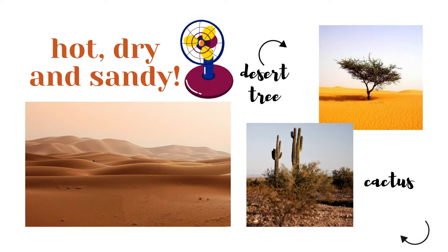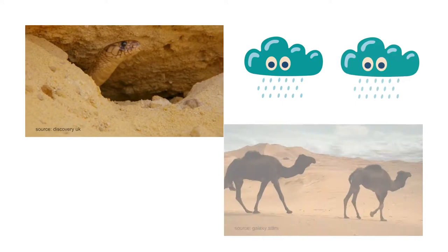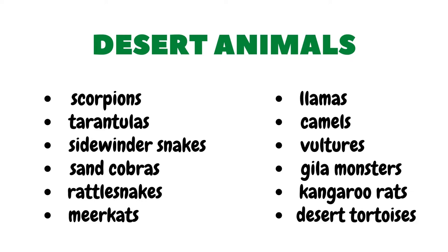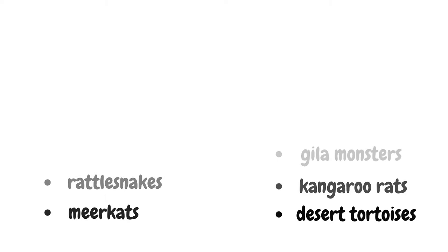A desert is a hot, dry, and sandy place. Not too many plants can live in deserts. Deserts are the habitats of animals that don't need a lot of water in order to survive. These animals include scorpions, tarantulas, sidewinder snakes, sand cobras, rattlesnakes, meerkats, llamas, camels, vultures, gila monsters, kangaroo rats, desert tortoises, and the like.